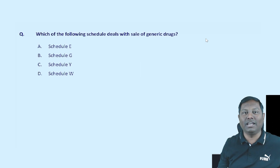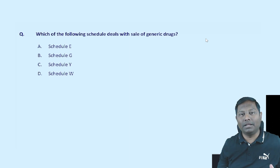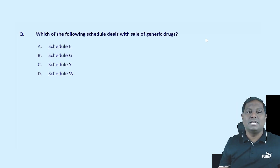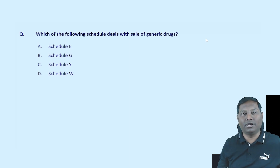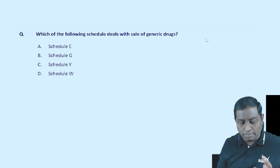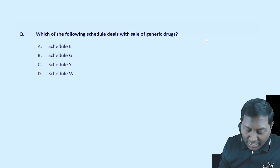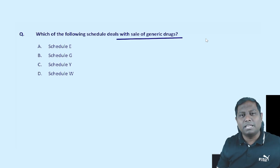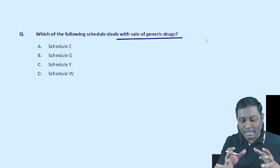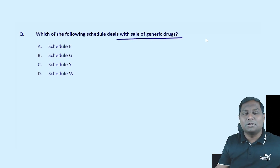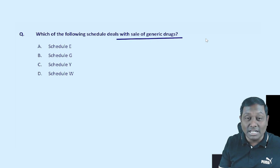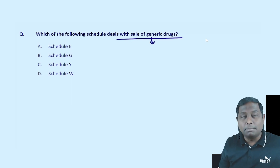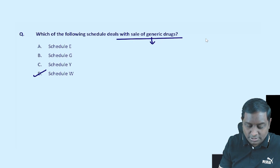Under the Drug and Cosmetic Act 1940, we have multiple rules and regulations that we must abide by for drug manufacture, sale, and production. There is a question: which of the following schedules deals with the sale of a generic drug? Generic drugs are available worldwide by the same name.